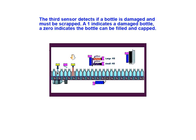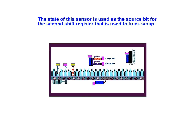The third sensor detects if a bottle is damaged and must be scrapped. A 1 indicates a damaged bottle; a 0 indicates the bottle can be filled and capped. The state of this sensor is used as the source bit for the second shift register, which is used to track scrap.